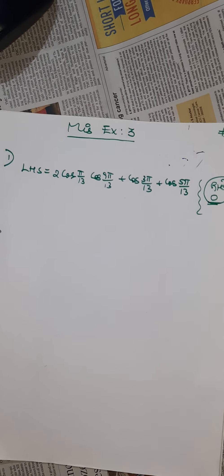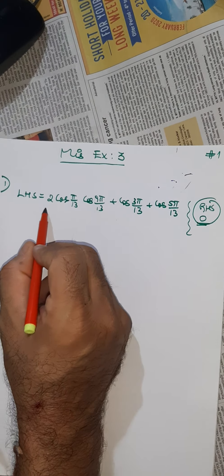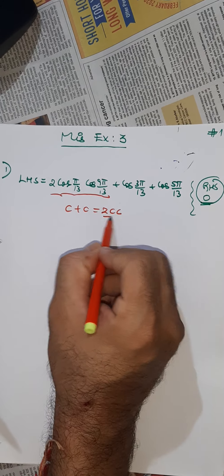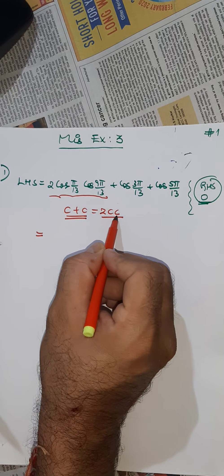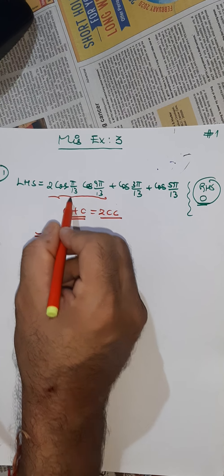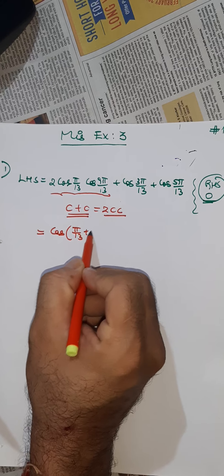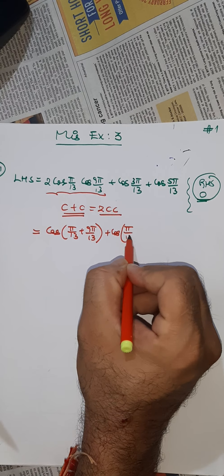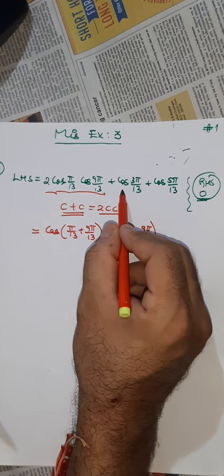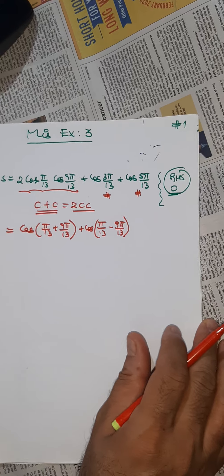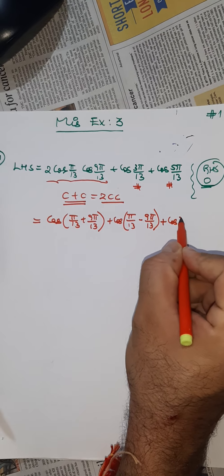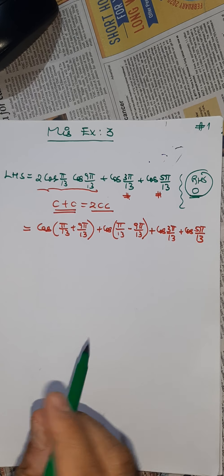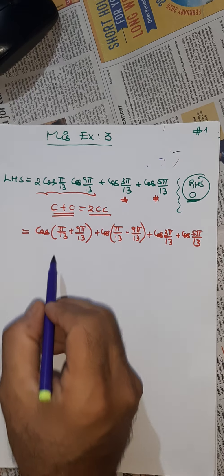In the first term we have the 2cc formula — cos + cos = 2cc. We are given this, so instead of 2cc we are going to write cos + cos. So cosine(π/13 + 9π/13) plus cosine(π/13 - 9π/13). This is the factor formula. This term and this term — the 2 — we keep as it is, plus cosine(3π/13) as it is, plus cosine(5π/13) as it is.